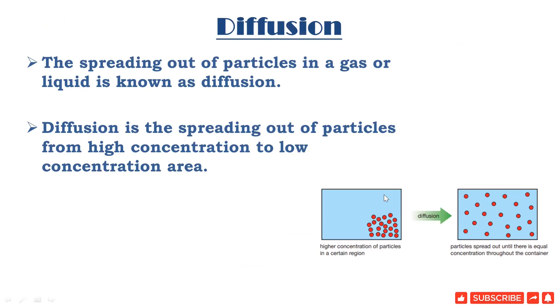As you can see in this container, the higher concentration of particles are on a certain region. When they get diffused, they move from this place and continuously move to all parts of the container, and they spread out until there is equal concentration throughout the container.